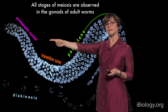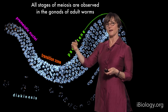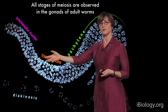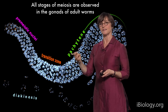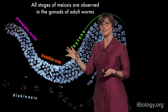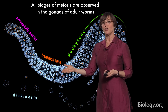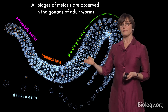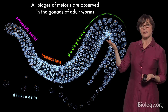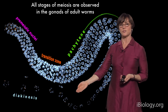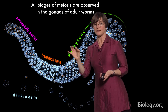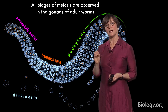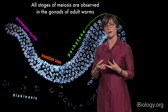In the distal region there's a pool of proliferating pre-meiotic nuclei. We can tell when meiosis starts because the nuclei take on a crescent-shaped appearance when we look at the DNA. We call that the transition zone, where pairing and synapsis occur and recombination is initiated. Recombination is then completed, and eventually the chromosomes condense. At diakinesis we see six little cruciform structures — the six pairs of chromosomes held together by crossover recombination.